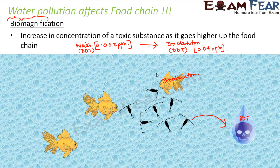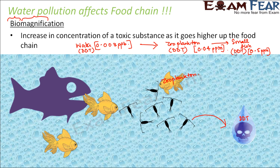Now, there are some small fishes which eat the zooplanktons. When the zooplanktons are eaten by the small fish, inside the body of the small fish you also have DDT. The concentration of DDT inside the small fish is 0.5 particles per billion — it has increased even further. When these small fishes are eaten up by big fishes, the concentration is further increased. The concentration of DDT in the big fish is 2 particles per billion. So in the water the concentration was 0.003, but in the big fish it is 2 particles per billion. The concentration of DDT is increasing as we go higher in the food chain.